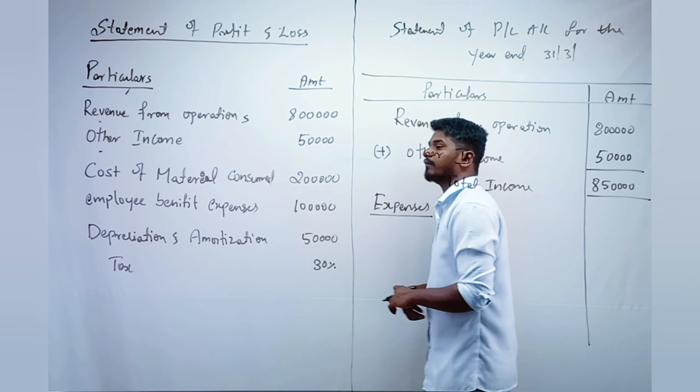Under Expenses we have: Cost of Material Consumed, Employee Benefit Expenses, and Depreciation and Amortization. Cost of Material Consumed is given as 2 lakh. Employee Benefit Expenses is given as 1 lakh. Depreciation and Amortization is given as 50,000 rupees.